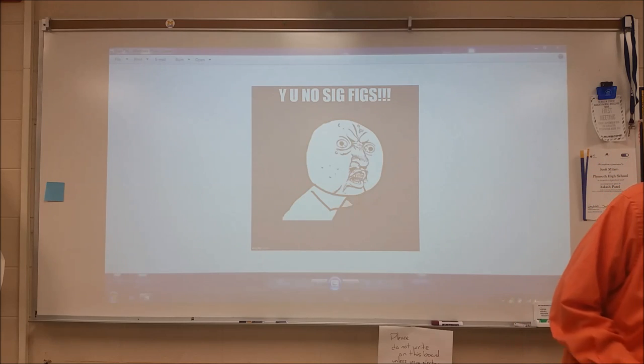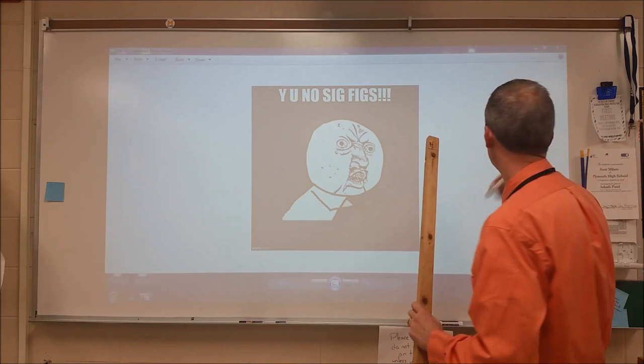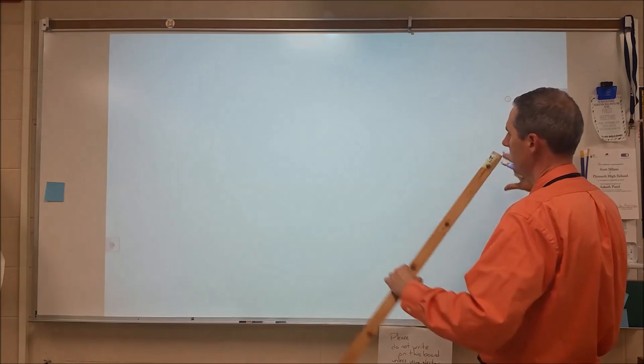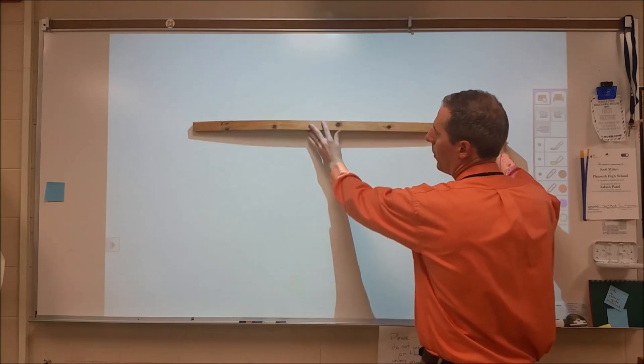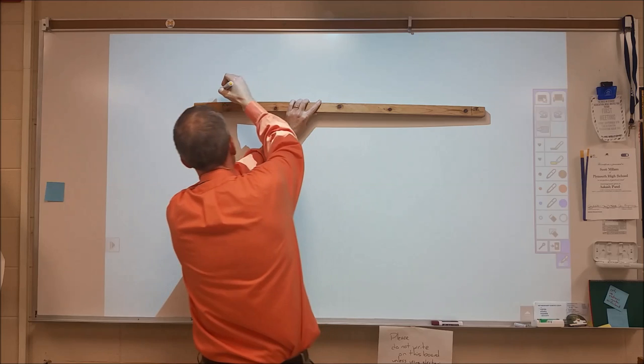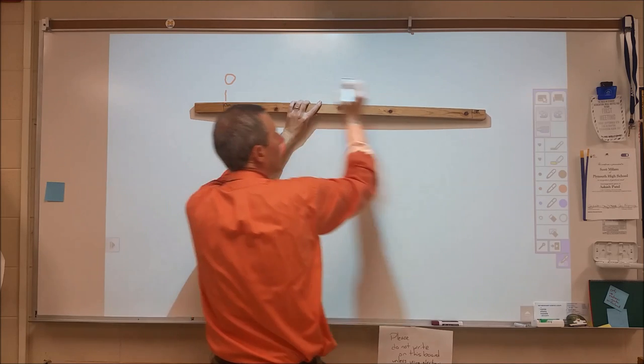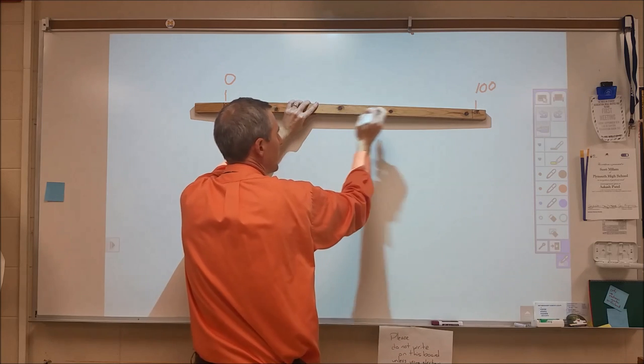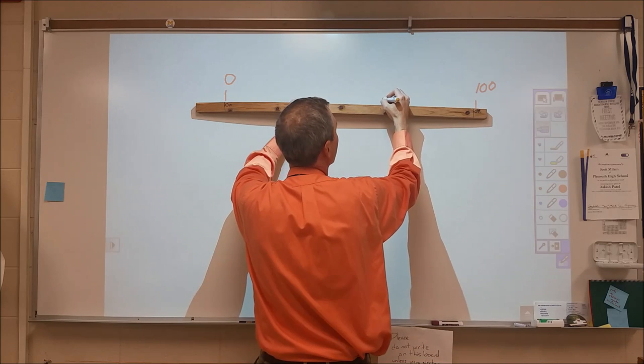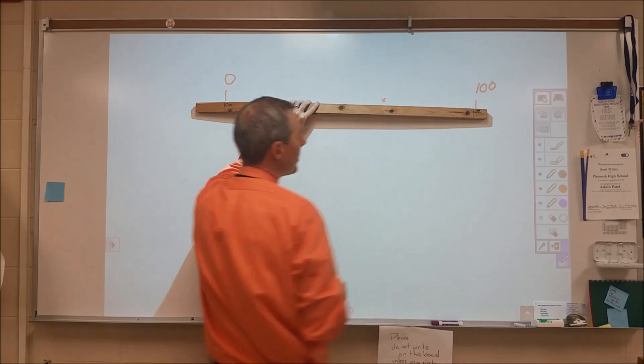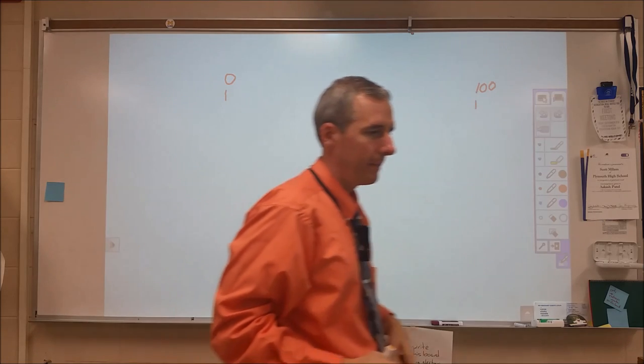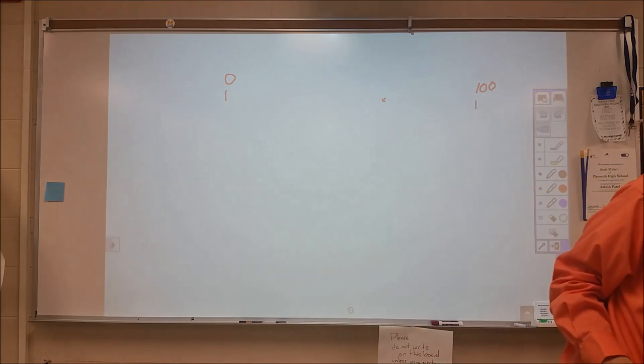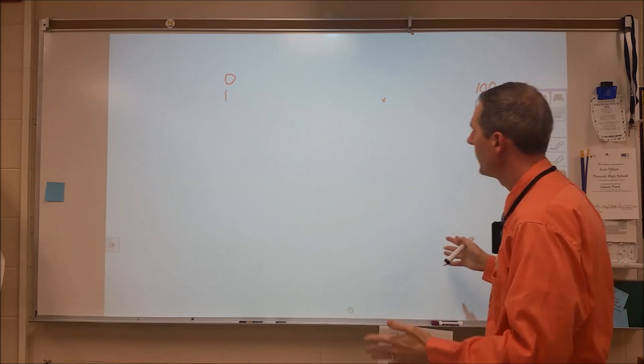To explain why we use sig figs, I start off with three different boards. So what we have marked here is over here we've got zero and over here we have a hundred. There's a red dot right here. So the question is, where is that red dot? Lots of different answers you can get.